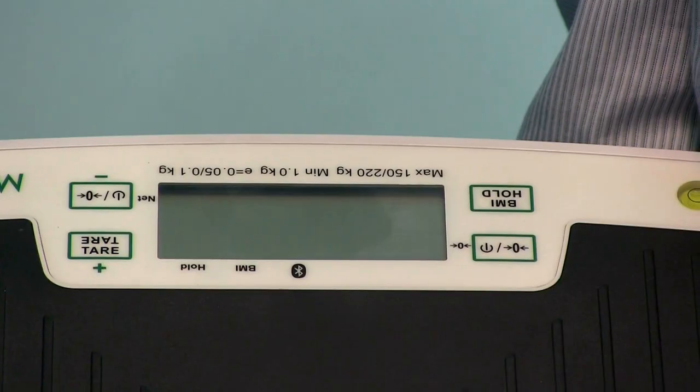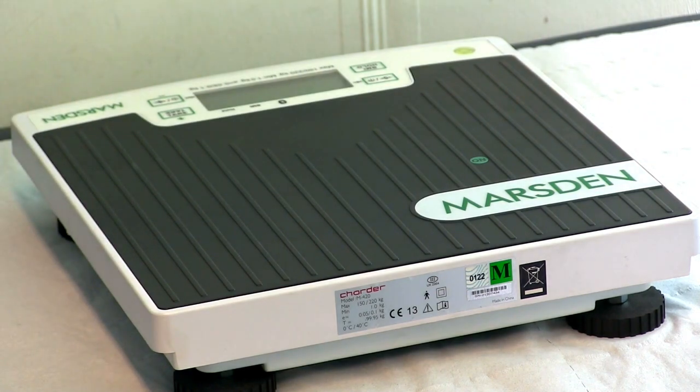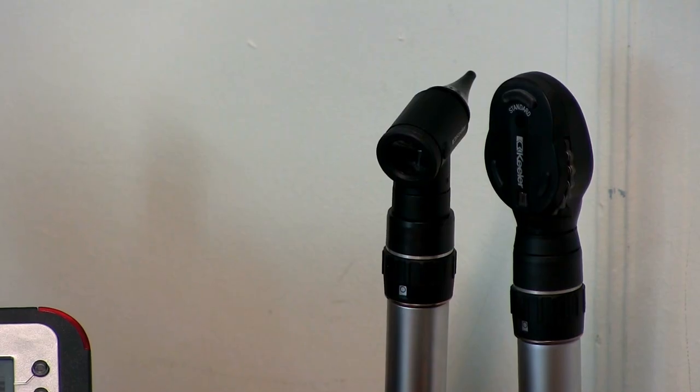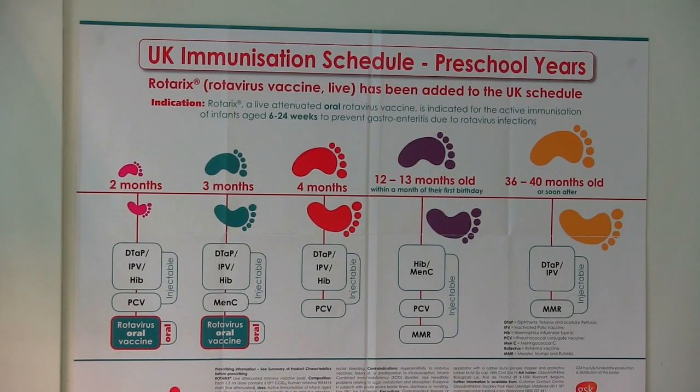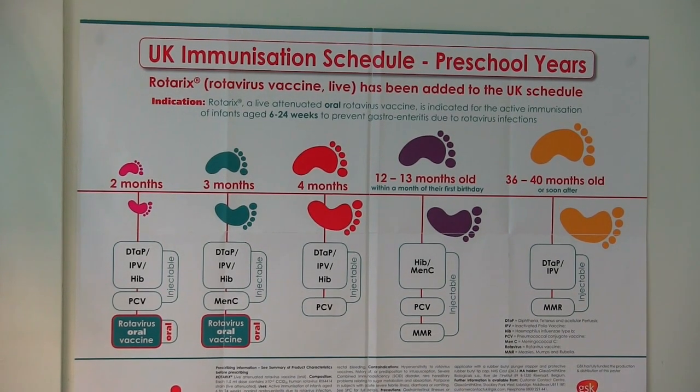The M420 has a capacity of 220 kilos and is accurate to 50 grams. It's class free and MDD approved, making it legal for use in hospitals, care homes, GP surgeries and health centres. It's also ideal for home visits and the National Child Measurement Programme.